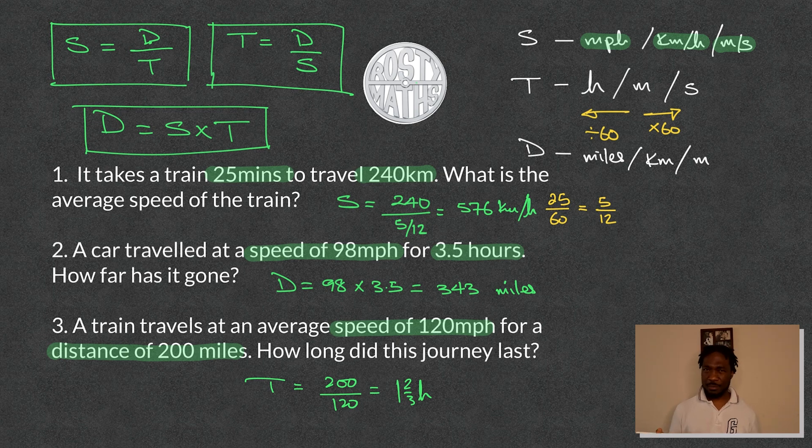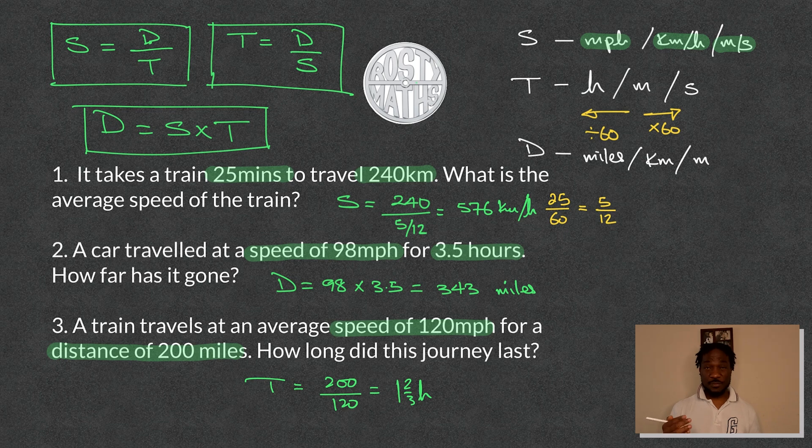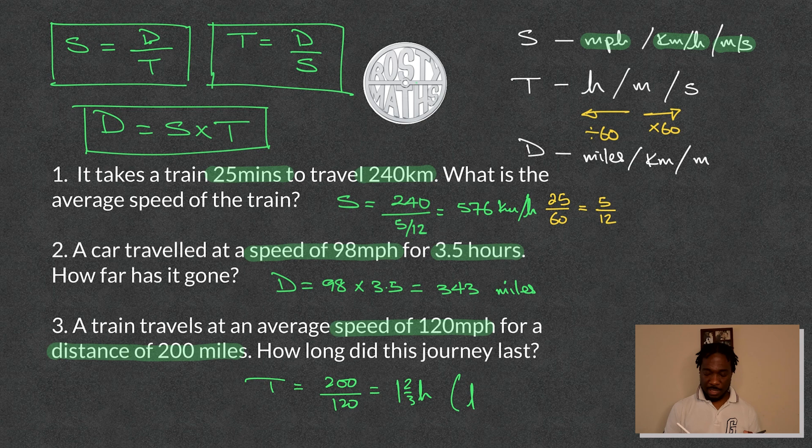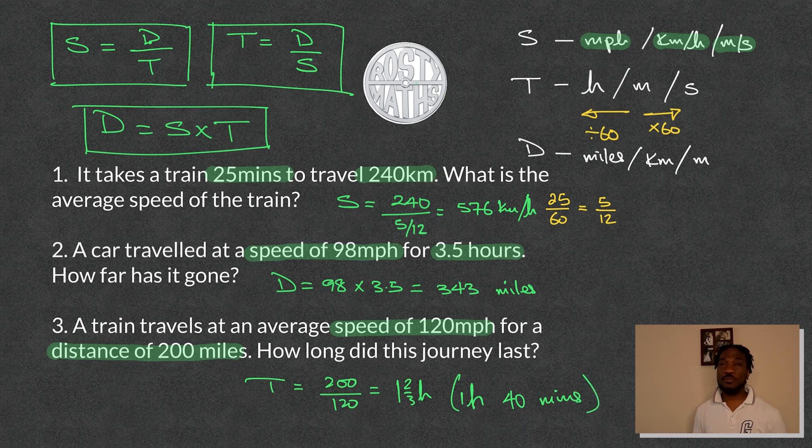Do you want that looking a bit simpler? Of course you do. Two thirds of an hour is 40 minutes because if you split an hour into three parts, it's going to be blocks of 20 minutes. Two blocks of that is going to be 40 minutes. So this is actually one hour and 40 minutes. And that's a quick brief introduction into this whole topic of speed, distance and time.